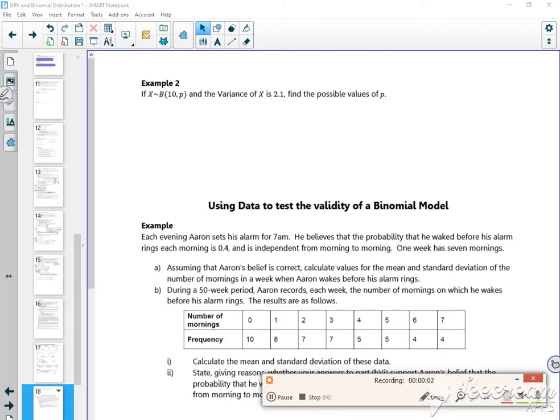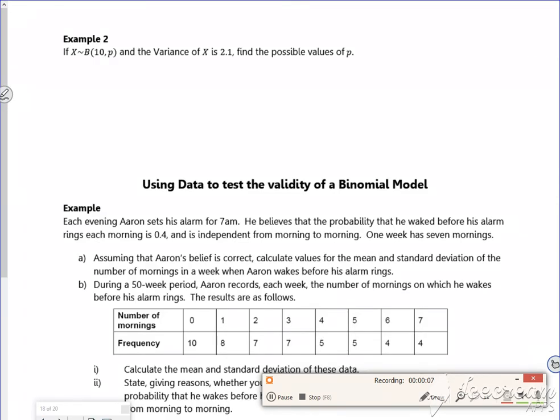For the next one, very quickly because I think I'm going to get kicked out. So X follows a binomial of 10 comma p, and the variance is 2.1. Find a possible value of p.